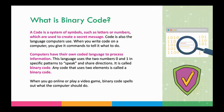Computers have their own coded language to process information. That information uses two numbers — ones and zeros — and that's how they speak patterns to share directions. If I type an A, there is a set of ones and zeros associated with that A, and the computer interprets and makes that command. It's called binary code. Any code that uses two elements is actually a binary code. When you play an online game — Fortnite, Roblox, Minecraft, whatever it may be — binary code is spelling out what the computer should do for your next action. It's always running in the background.